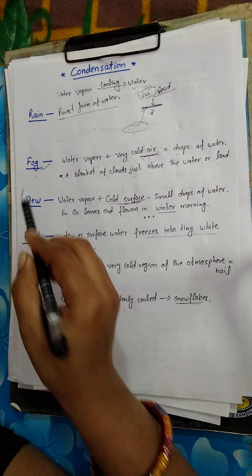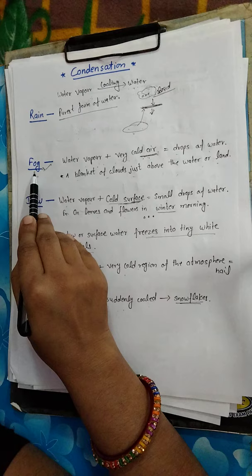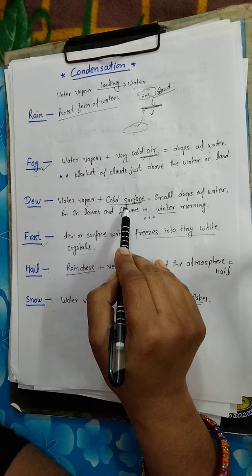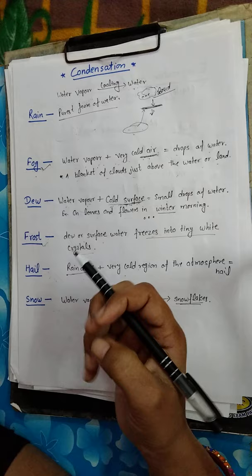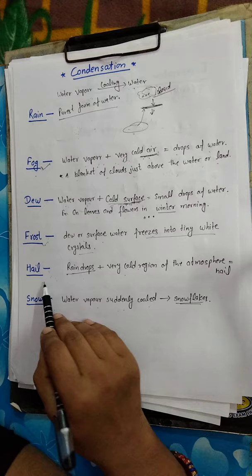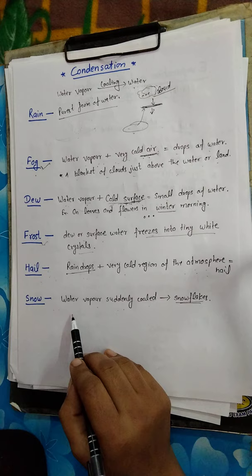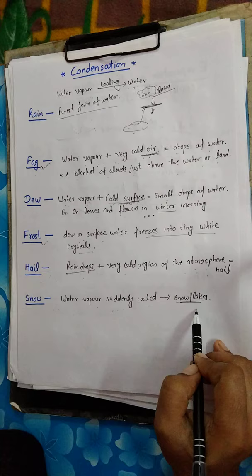So I hope that this concept is clear. To revise: fog is water vapor plus very cold air; dew is water vapor plus cold surface; frost is when dew freezes into crystals; hail is raindrops passing through a very cold region of the atmosphere forming ice stones; and snow is water vapor suddenly cooled into snow flakes. This is the condensation process.